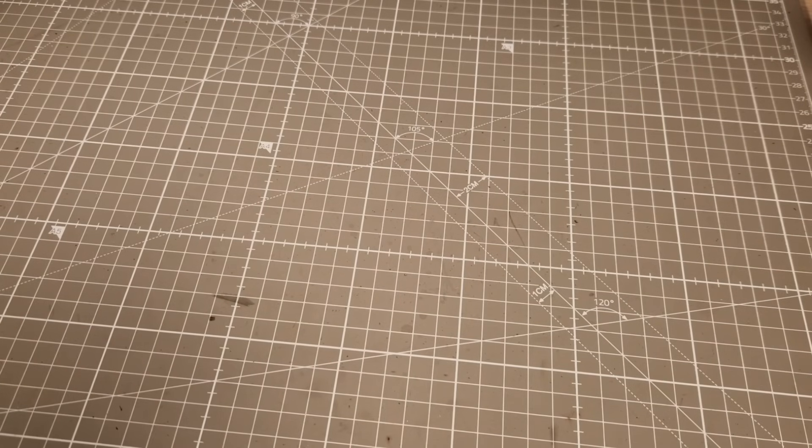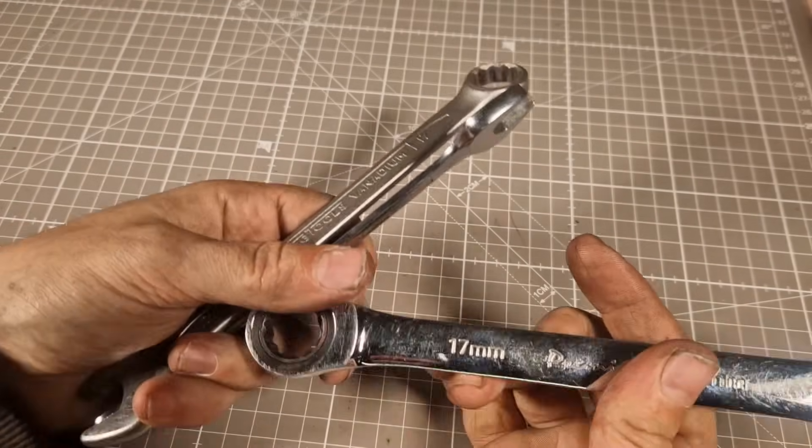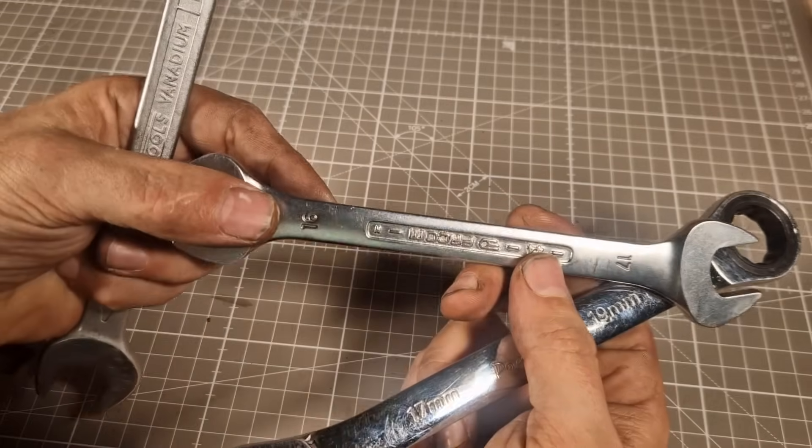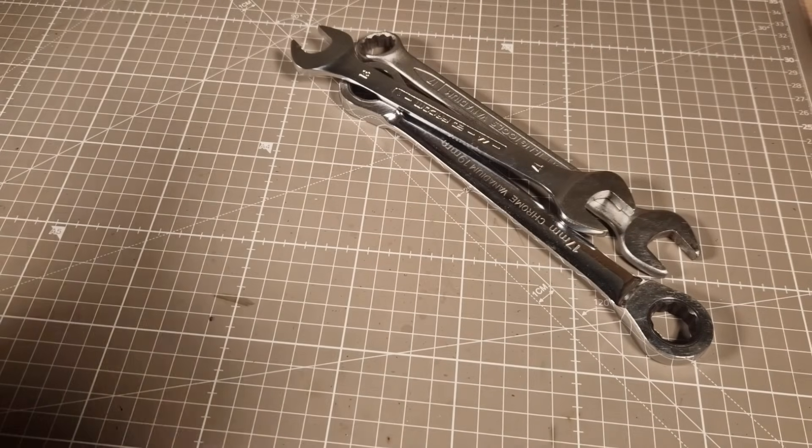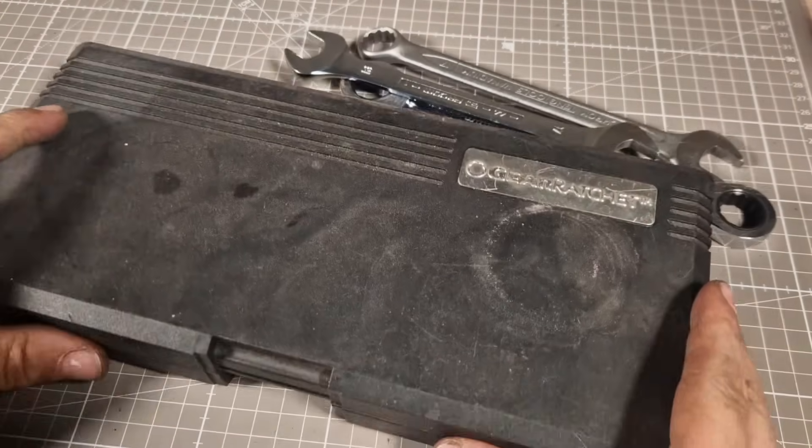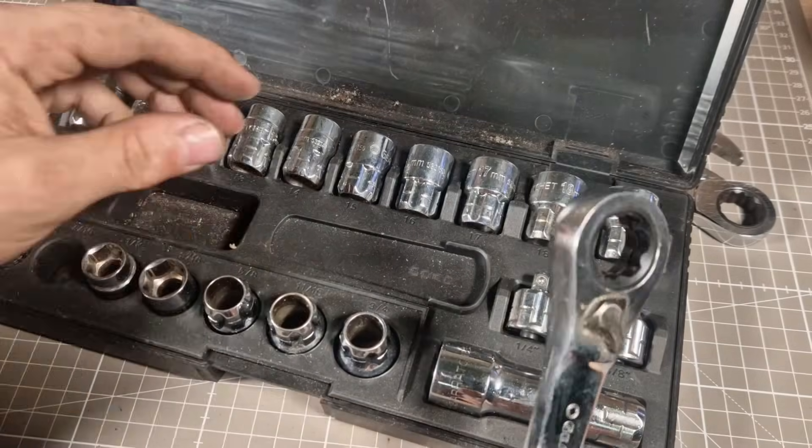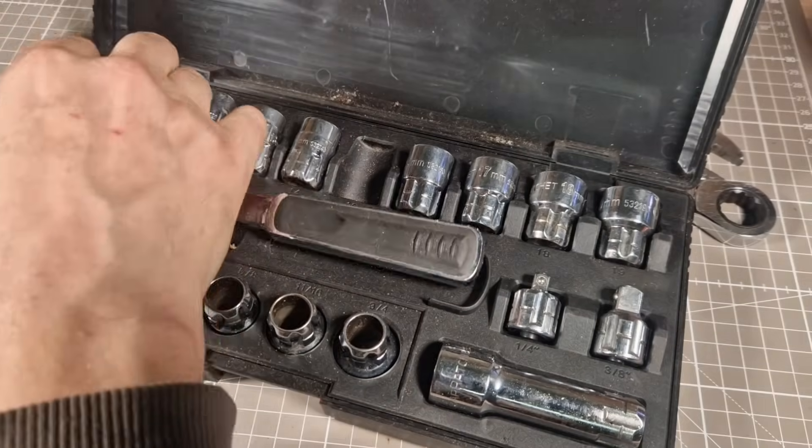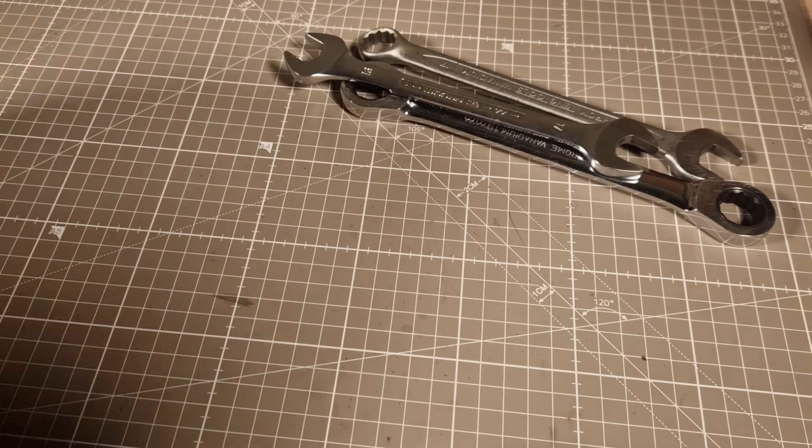That's basically it really. I've got some spanners here, there's a Facom, there's a Teng, and this is a Sealy one I think, this ring spanner. Premier is a Sealy brand, that's a Facom. I don't know why these are here actually. I've got some gear ratchets but I don't like this.